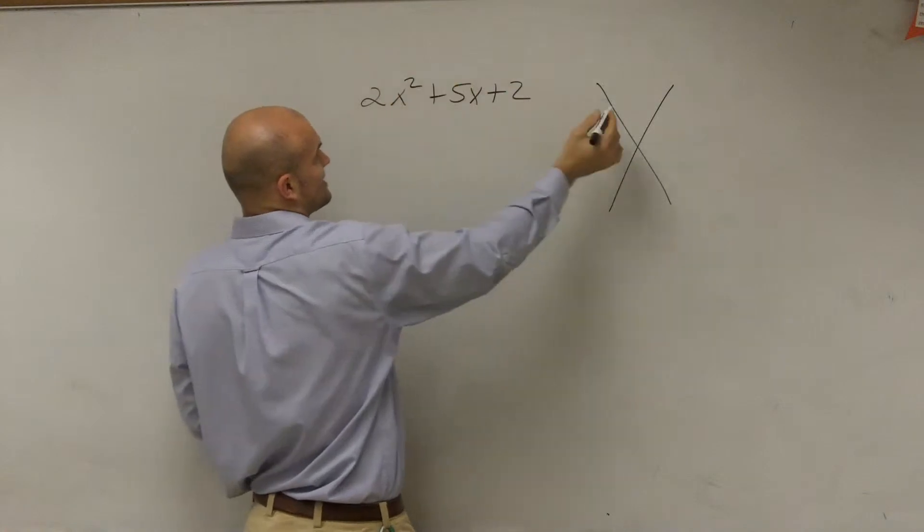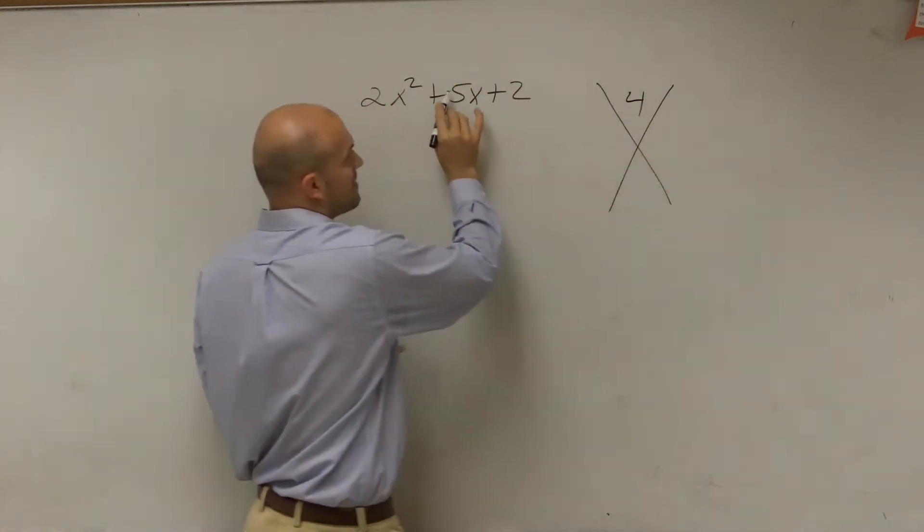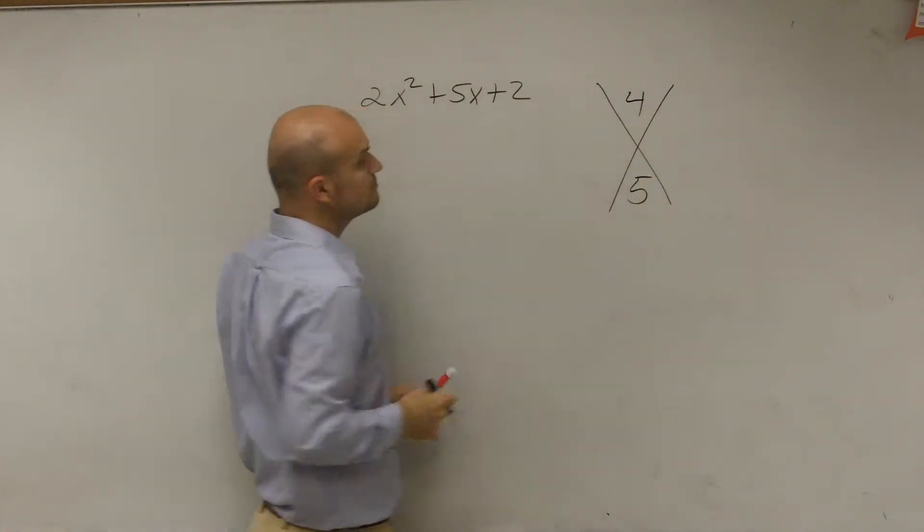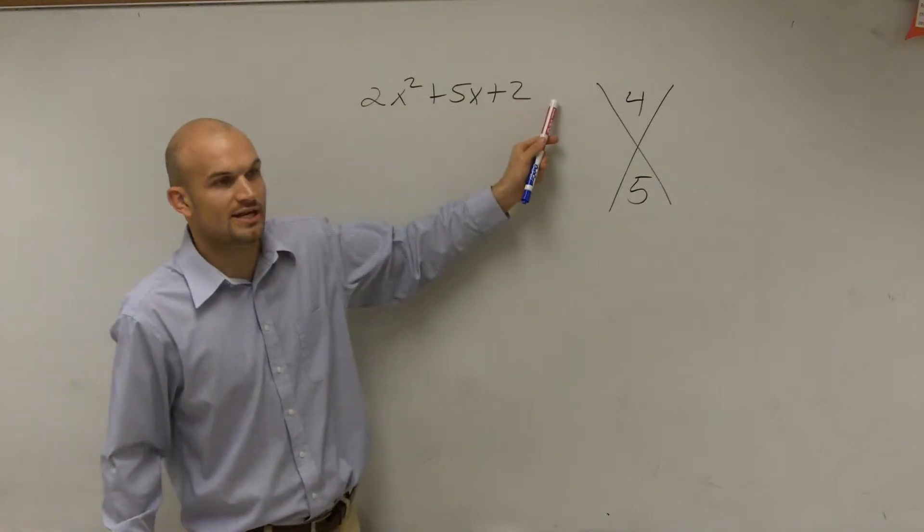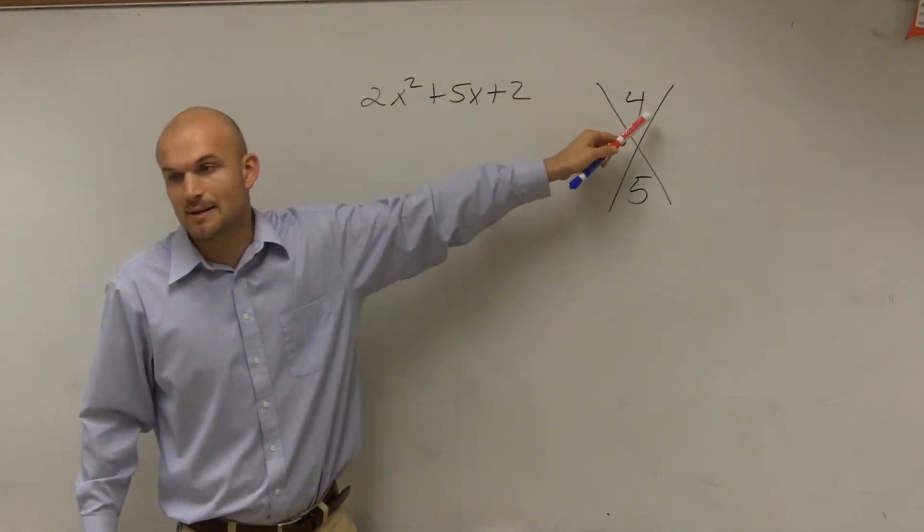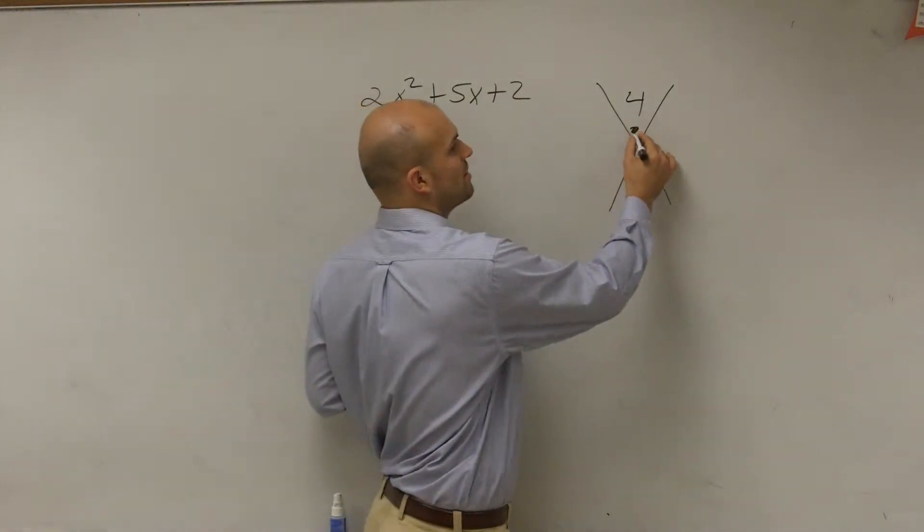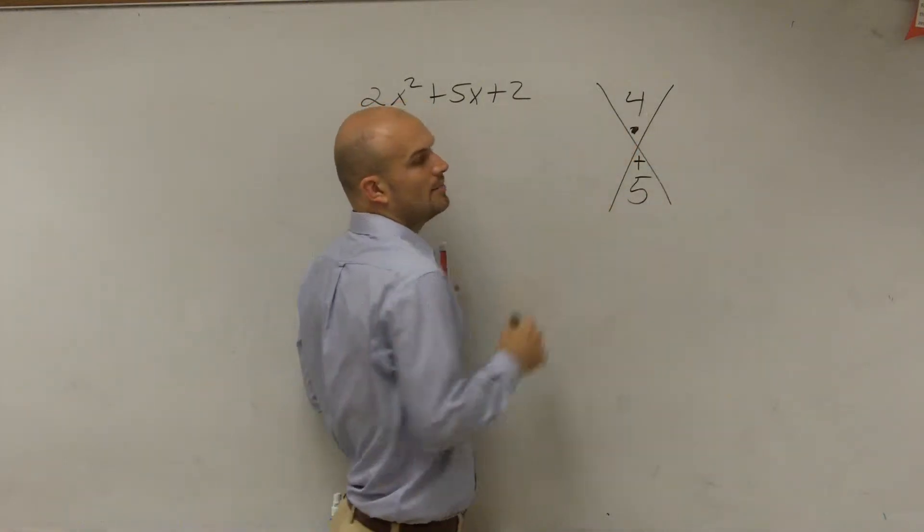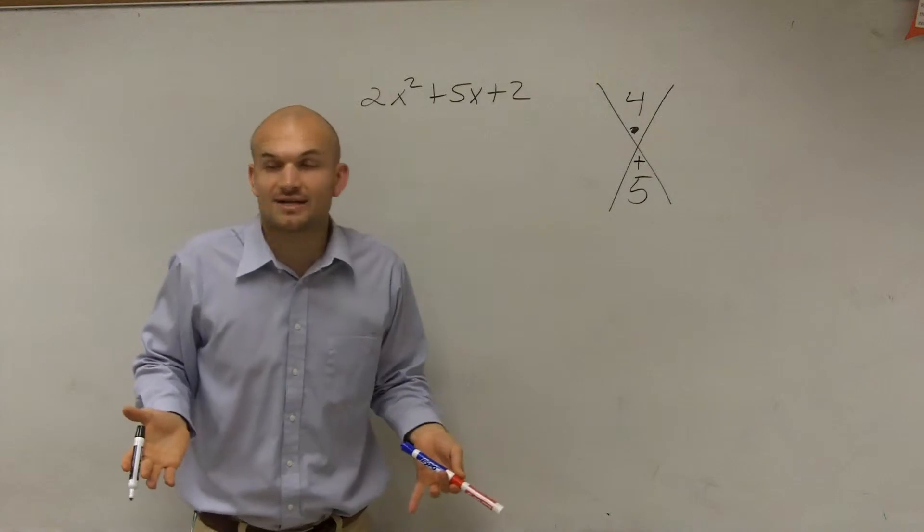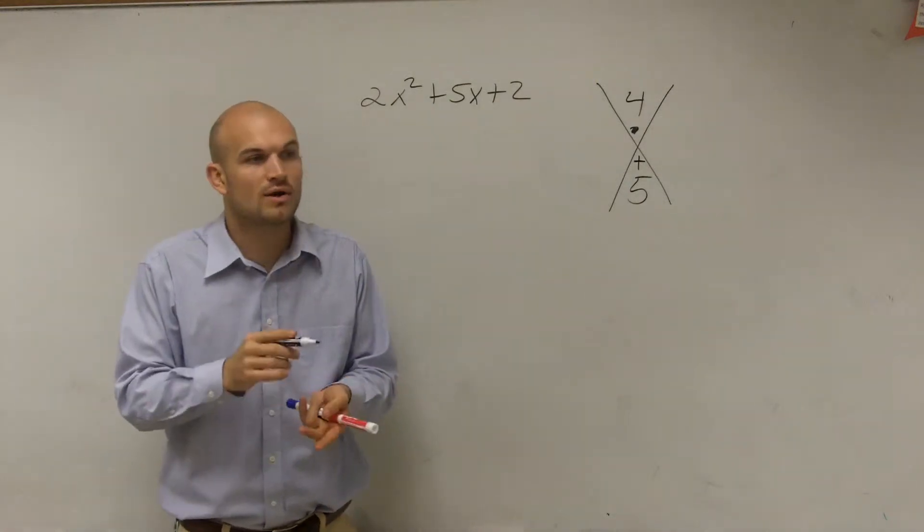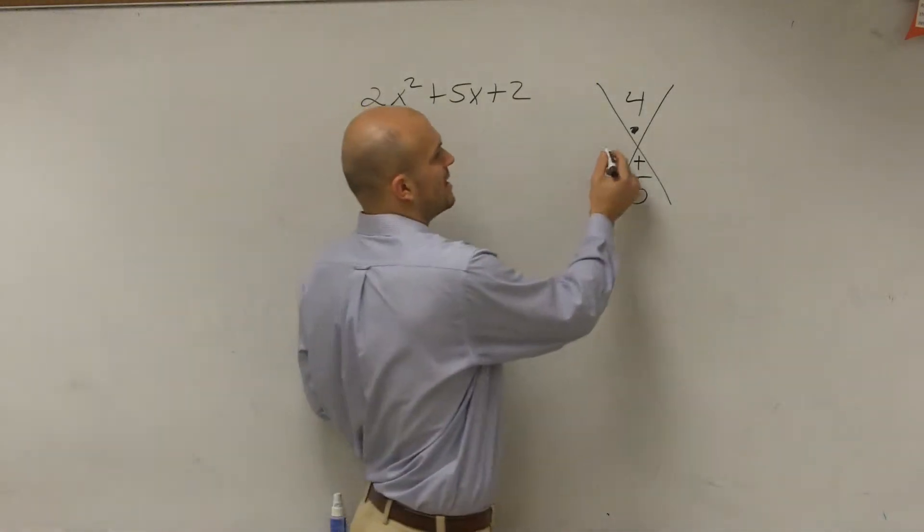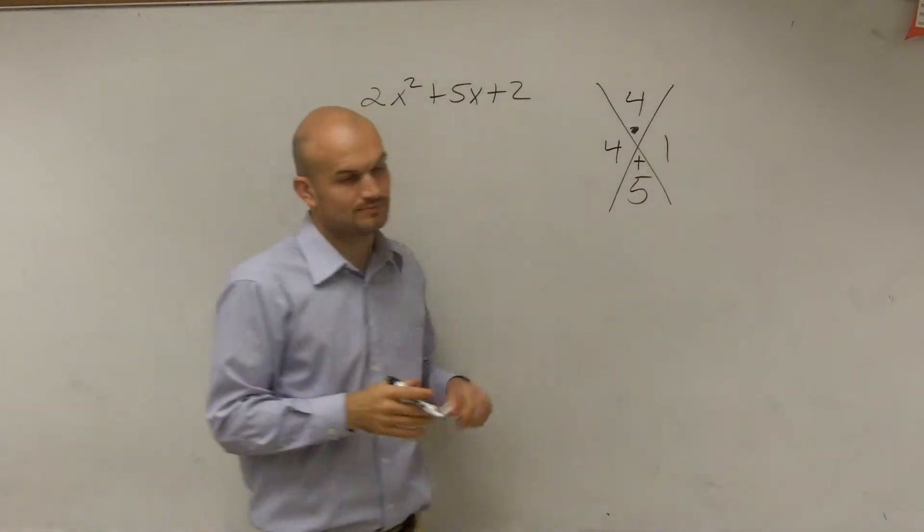We're going to do A times C, which would be 4, and then B is 5. You multiply your coefficient and your constant to get the top number, then take your B down there. What we want to determine is what two numbers multiply to give us 4 but add to give us 5. Looking at the factors of 4, which would be 4, 2, and 1, we notice that positive 4 and 1 work. We're going to do that.